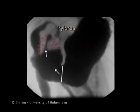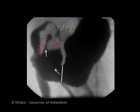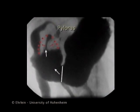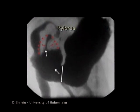When the peristaltic wave moves over the proximal antrum, chyme is propelled into the relaxing terminal antrum. This, therefore, is the propulsion phase.